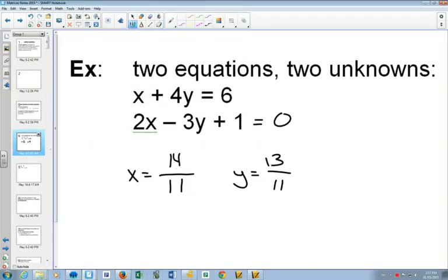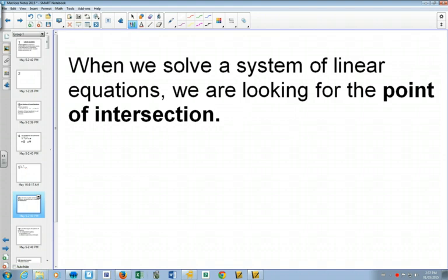There we go. All right. So what this means is these were both lines, and what we just found was the point where those two lines intersected. We have our x-coordinate and our y-coordinate.